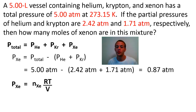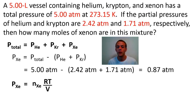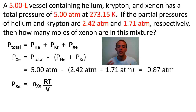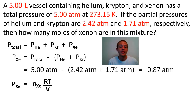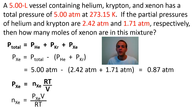Now that we have the partial pressure of xenon, we use the ideal gas law expression: P_xenon equals n_xenon times RT over V. Solving for n, we multiply both sides by V and divide by RT, giving: n_xenon equals (P_xenon × V) / (R × T). Plugging in: 0.87 atmospheres × 5.00 liters, divided by 0.08206 L·atm/mol·K × 273.15 K.